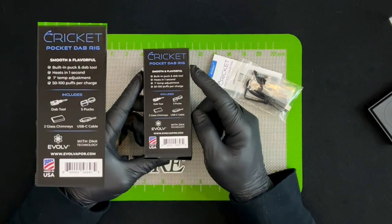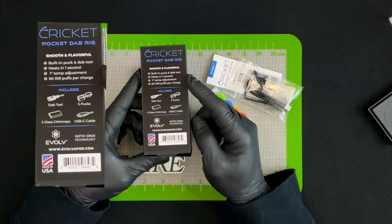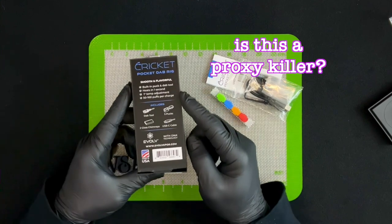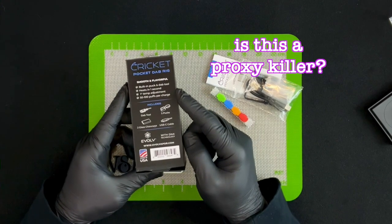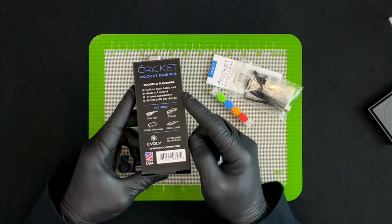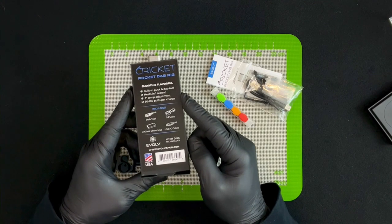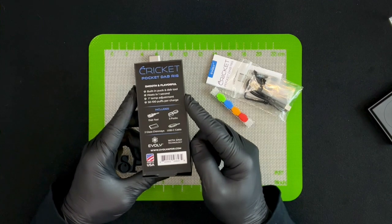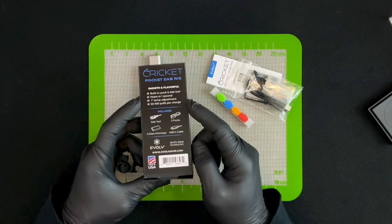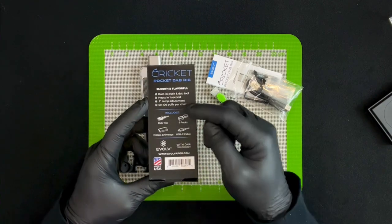Cricket pocket dab rig: smooth and flavorful, built-in puck and dab tool, heats in one second, one degree temp adjust, 50 to 100 puffs per charge. Wow, that seems impressive. Is this a proxy killer? Am I unboxing something that's going to make me sell my proxy? If this makes me get rid of my proxy, I don't know what I'm going to do. But this is made in the US and it does 50 to 100 puffs per charge.